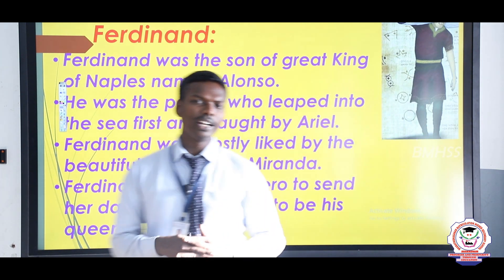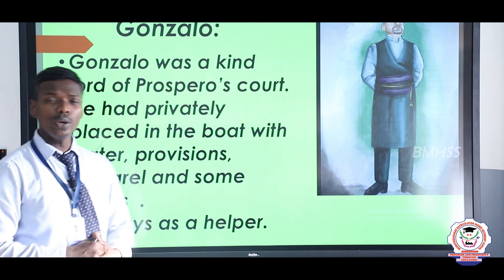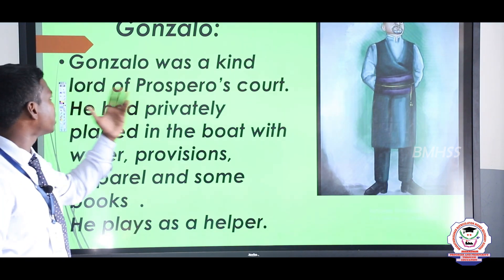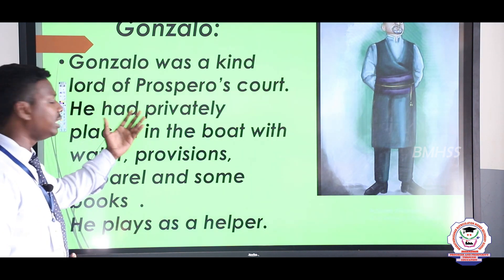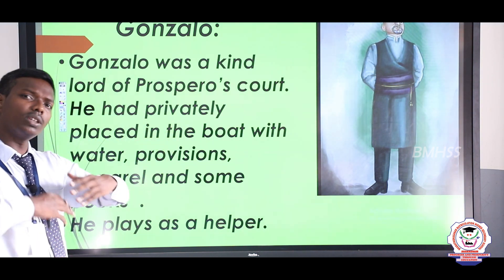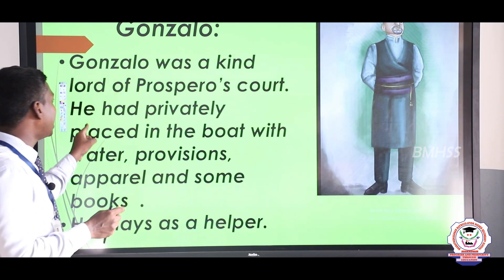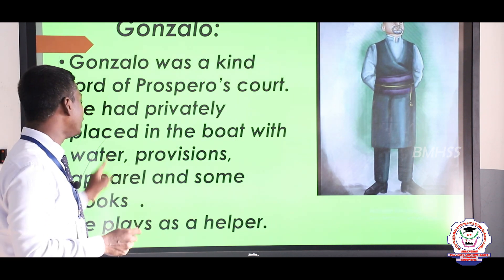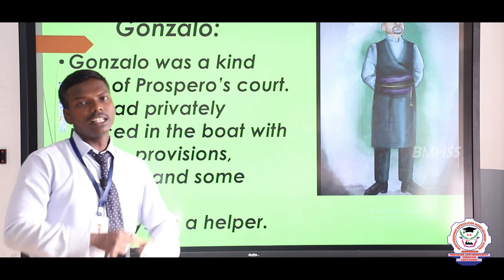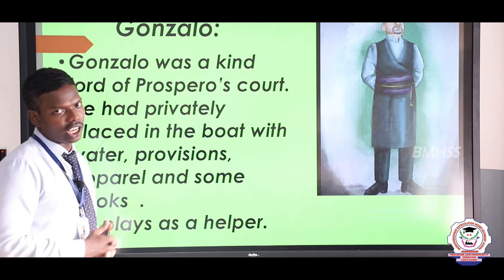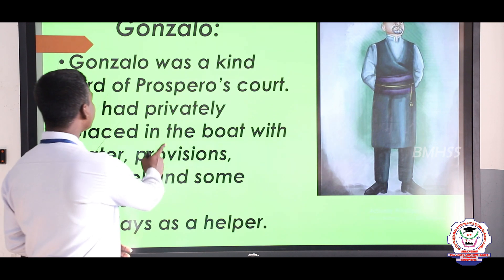Gonzalo was a kind-hearted person and a kind lord in Prospero's court. Among all the persons in the court, it was Gonzalo who was the most kind-hearted. He had privately placed on board provisions of water, apparel, and some books — books related to magical powers. He played the role of a helper throughout the story.